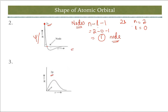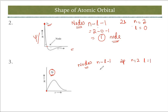For the 2p graph, it starts from the center (origin) and goes up, meeting the graph at infinity. The number of nodes for 2p is n − l − 1 = 2 − 1 − 1 = 0 nodes. That means it starts from the center, won't cut the axis, and simply goes to meet at infinity.